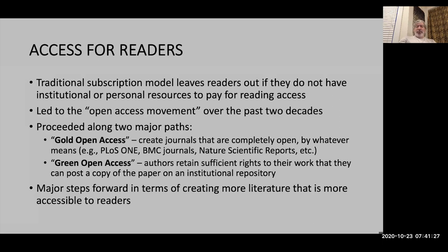Another route was green open access — a traditional subscription journal where you don't read if you don't pay, but the journal allowed authors to retain rights to their work such that they could post copies of their papers on various institutional repositories. This was more of a grassroots open access, but it had a lot of effect and got a lot of publicity. These are major steps forward in creating a scientific literature that's increasingly open and accessible to readers.